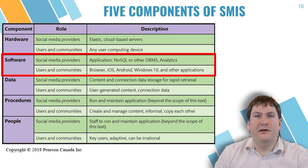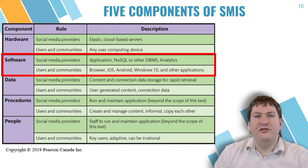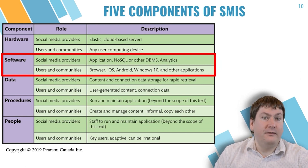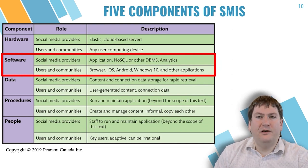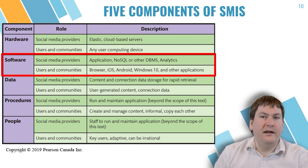Software for social media providers would be the server applications, DBMS, and other software systems that define the social network. Commonly a mix of both relational and NoSQL databases are used, as the sheer amount of data and speed of transactions are too much for conventional DBMS. This is one of those rare cases where a business might create their own DBMS — for example, Facebook developed Cassandra, a NoSQL DBMS to power Facebook's search features. For users and communities, the software component would be the operating system and the web browser or app used to connect to the social media site.